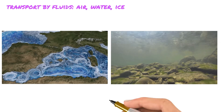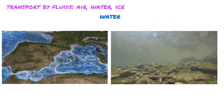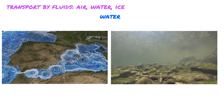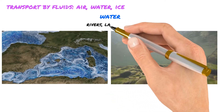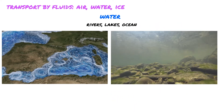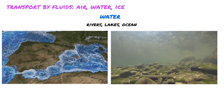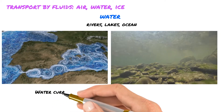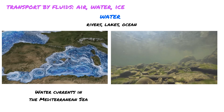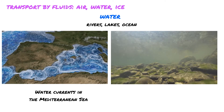Water is the main and most important means of sediment transport, occurring basically anywhere water flows — in rivers, lakes, and in the ocean. This video shows the movement of currents in the Mediterranean Sea using data from NASA. This moving marine water carries a huge volume of sediment within it.